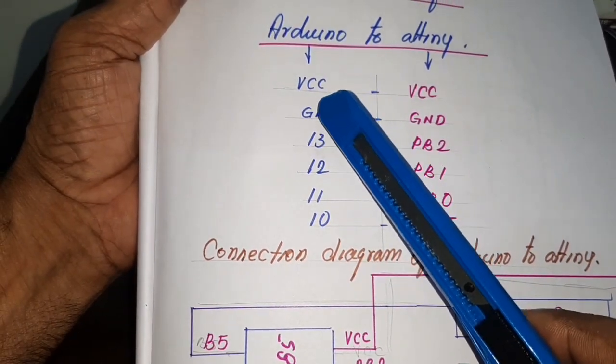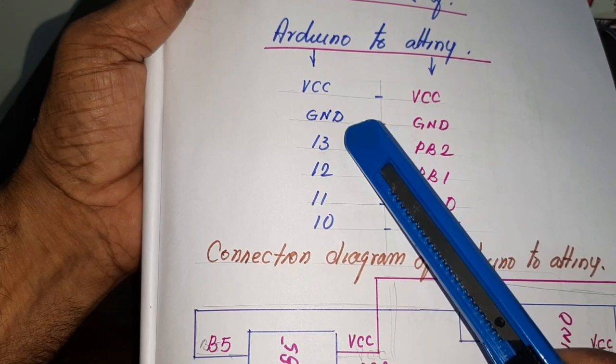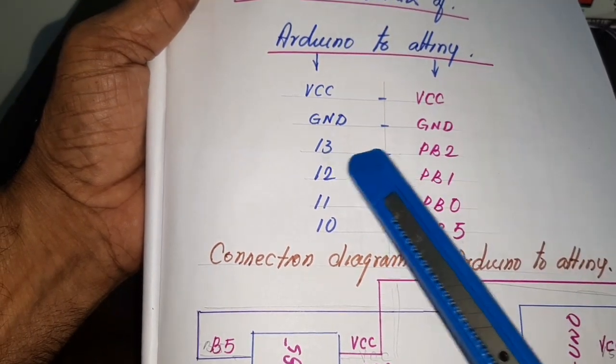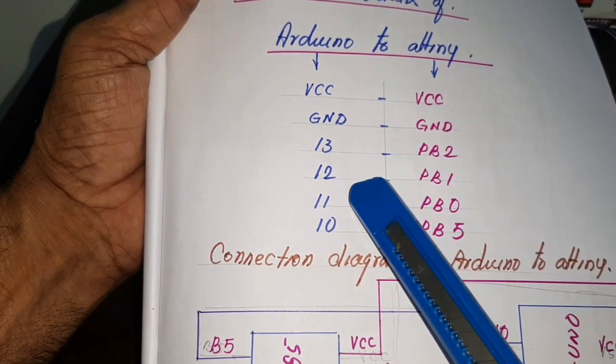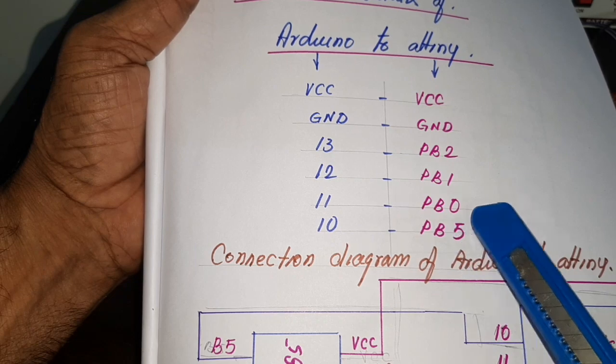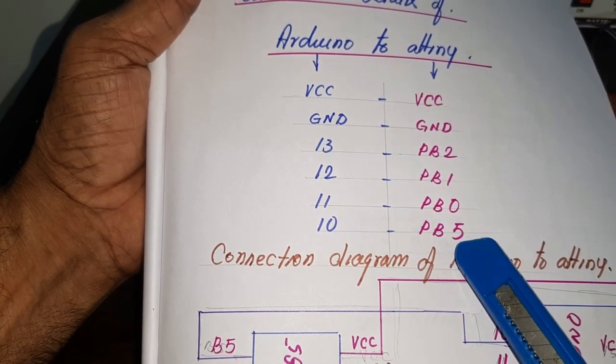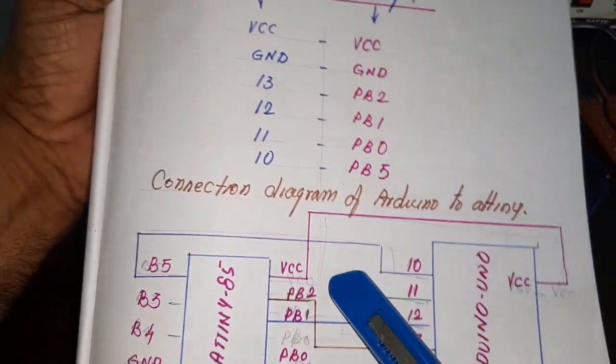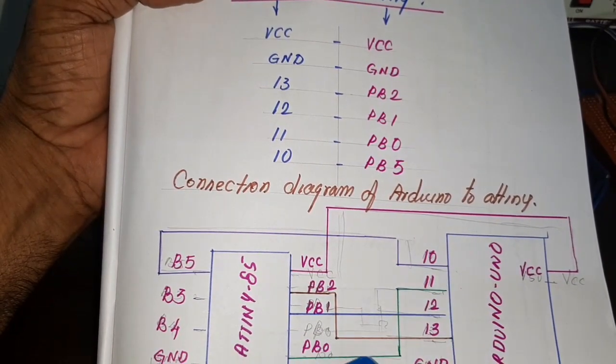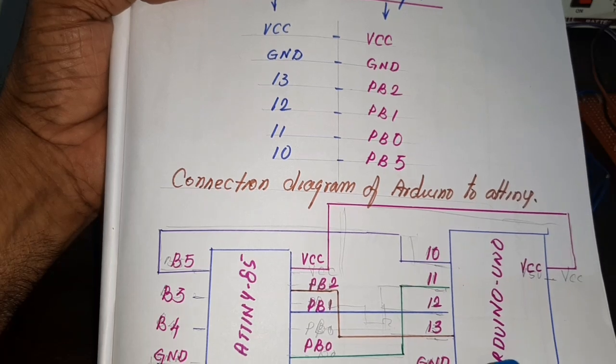Here, Arduino VCC, ground, 13, 12, 11, 10. The 13 pin is given to PB2, the 12 pin is given to PB1, 11 pin is given to PB0, and 10 pin is PB5. The connection diagram for in order to program the ATtiny, the connection diagram of the ATtiny and the Arduino Uno.